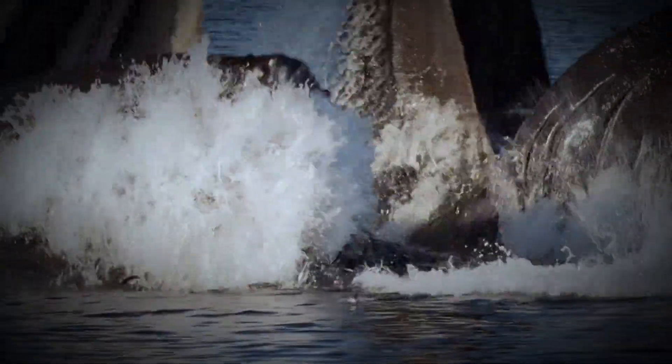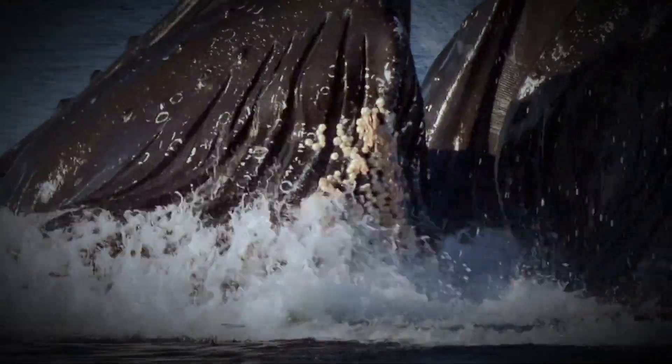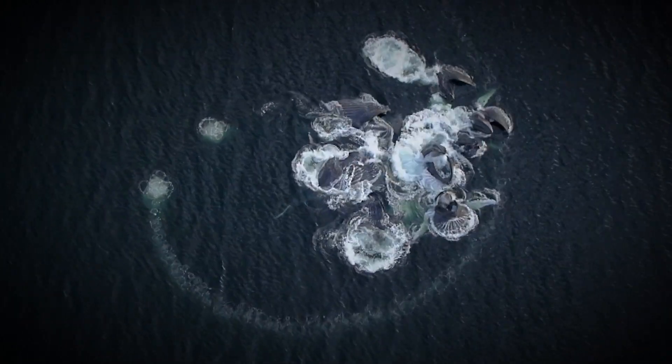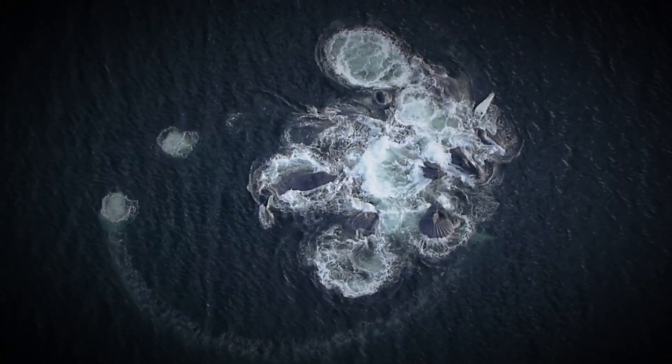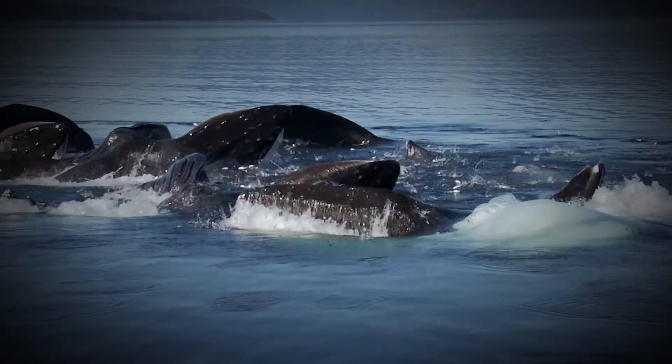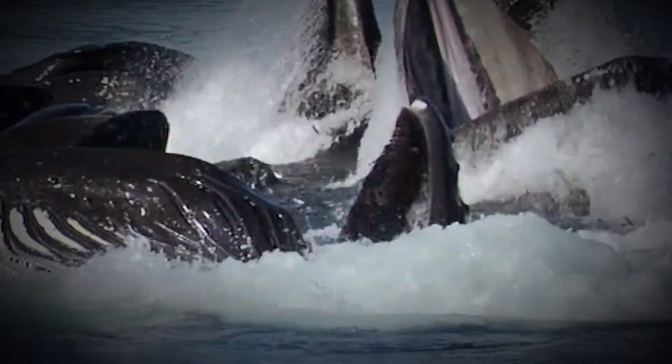But the humpback whale isn't done yet. With one swift motion, it opens its massive jaws and swims straight up through the center of the bubble net, gobbling up as many fish as it can in one go. And just like that, the humpback whale has scored a delicious meal using one of the coolest hunting techniques in the animal kingdom.